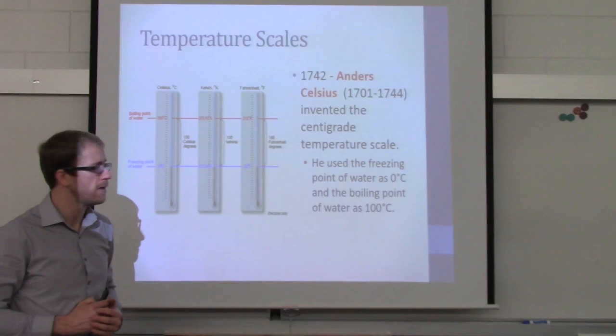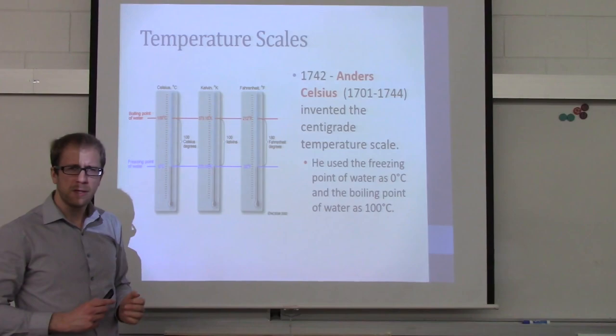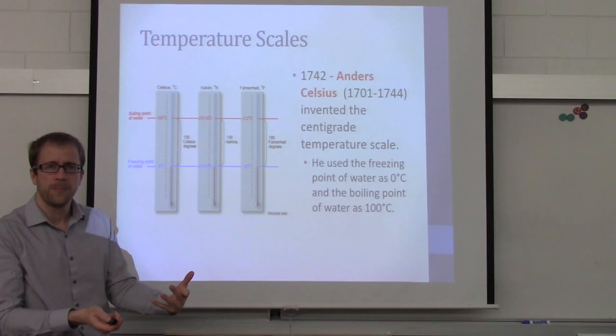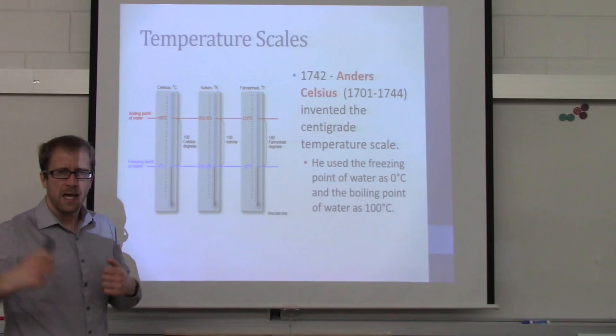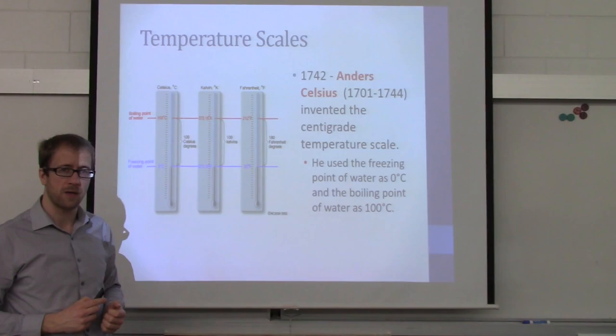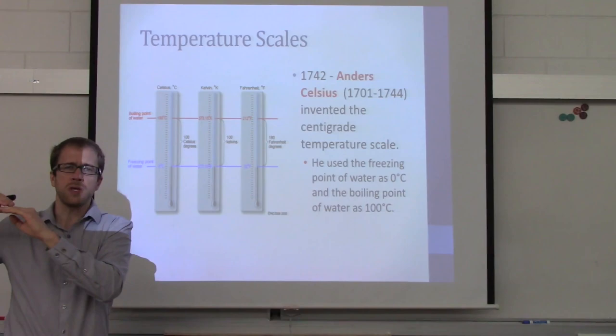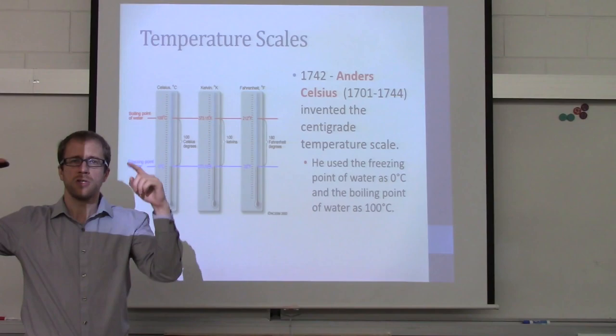Now if you look carefully at those numbers between Kelvin and Celsius, you'll see a relationship. At zero degrees Celsius it was 273.15 Kelvin, and at 100 degrees Celsius it was 373.15 Kelvin. So for every one degree Celsius increase, you also get a Kelvin increase of one — those scales are one-for-one. The Fahrenheit scale is not that nice.